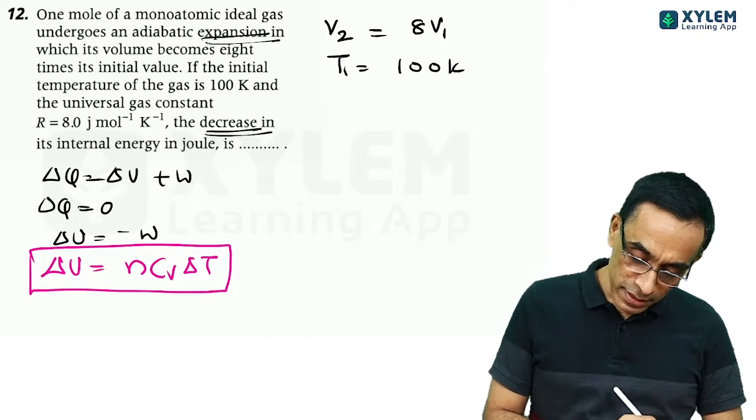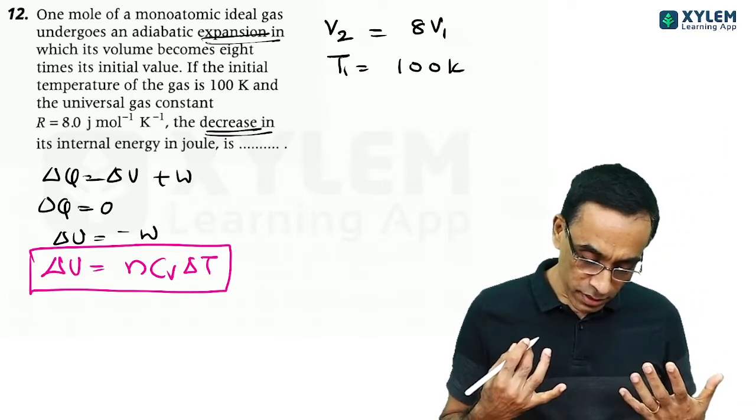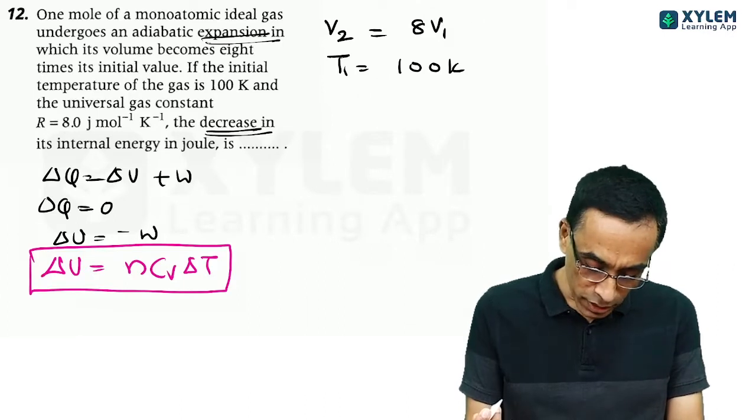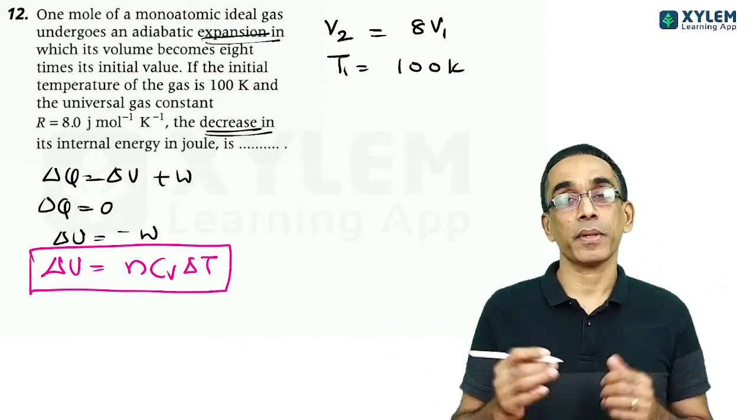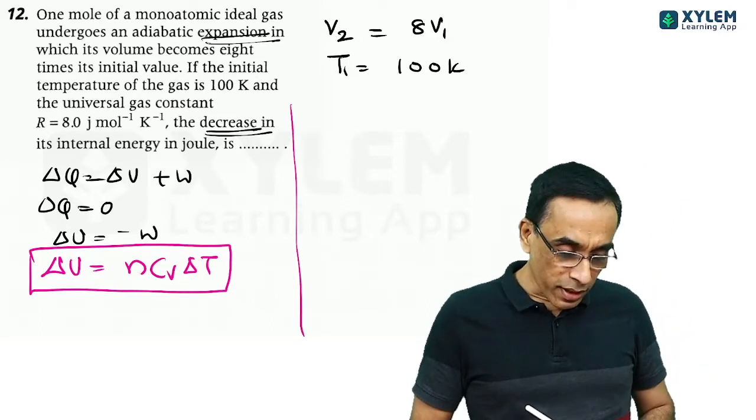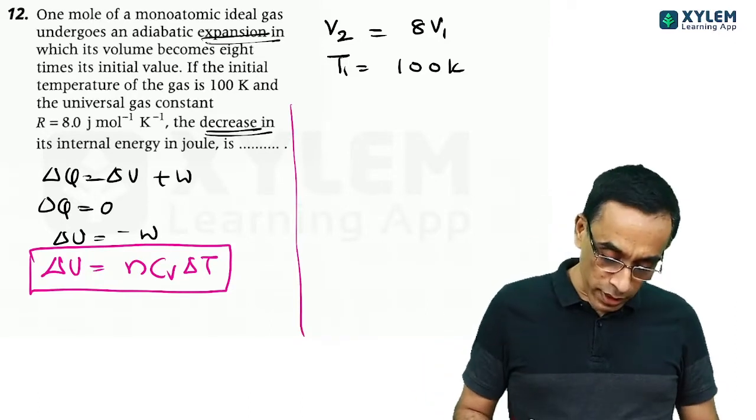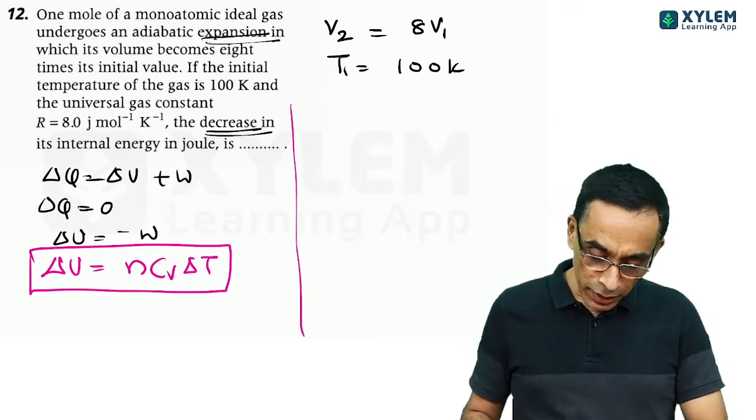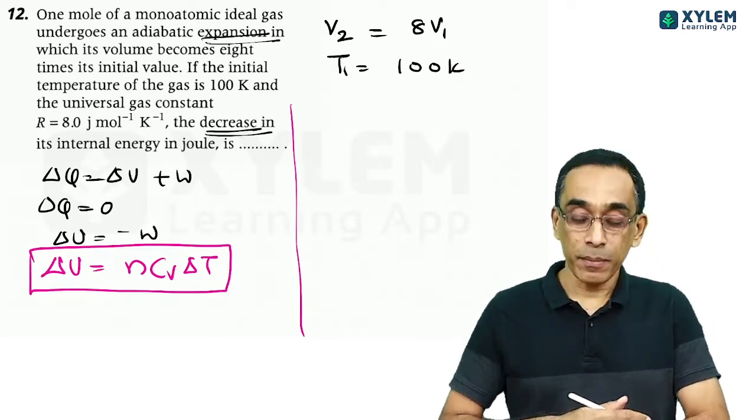What you need to find out is the change in temperature. That is it. For an adiabatic process, we know work done is the negative of the change in internal energy. That is easily calculated. How to find out the change in temperature?